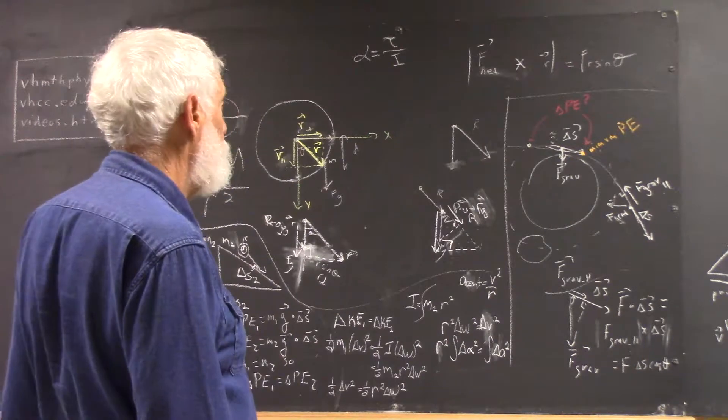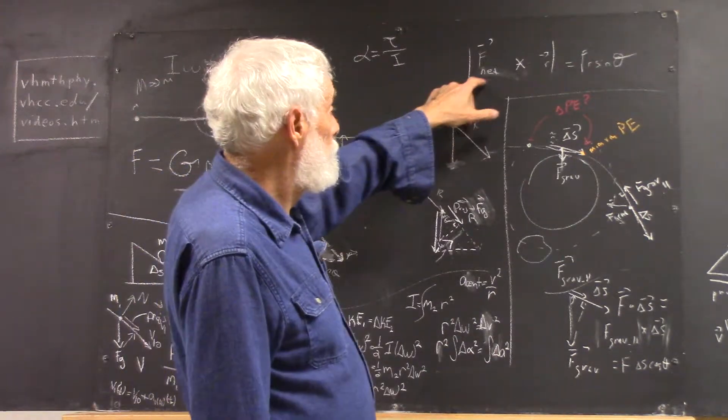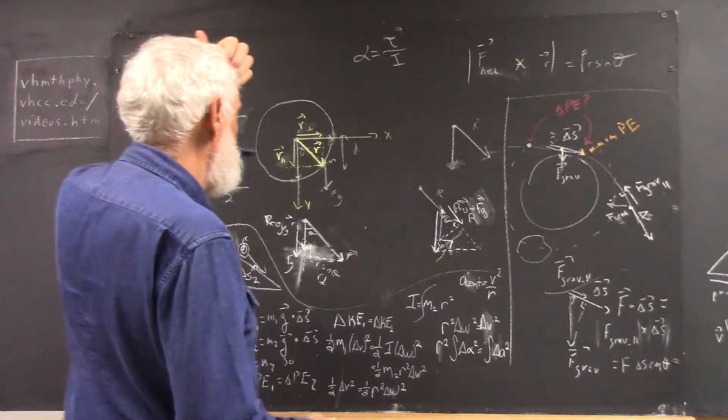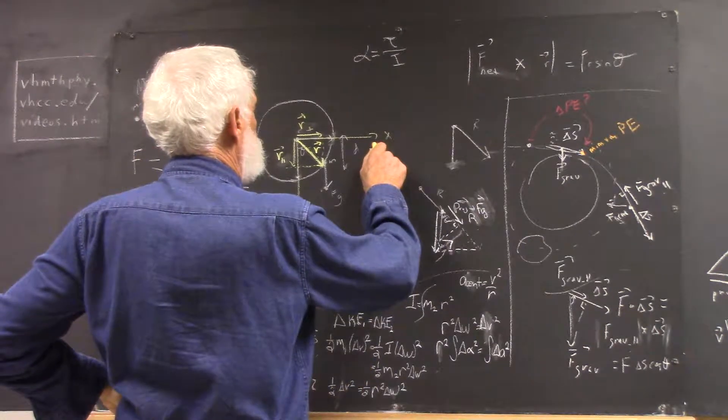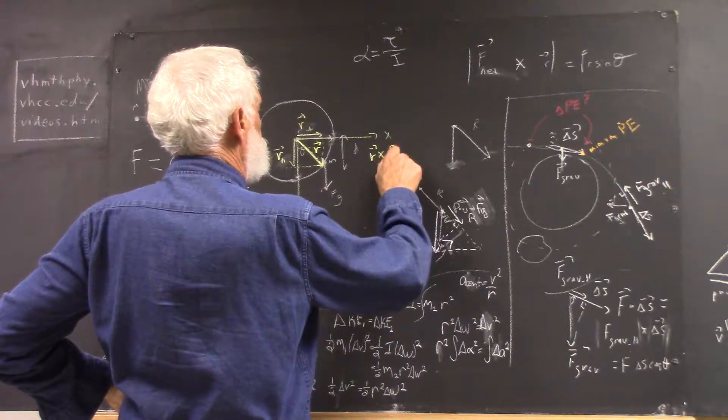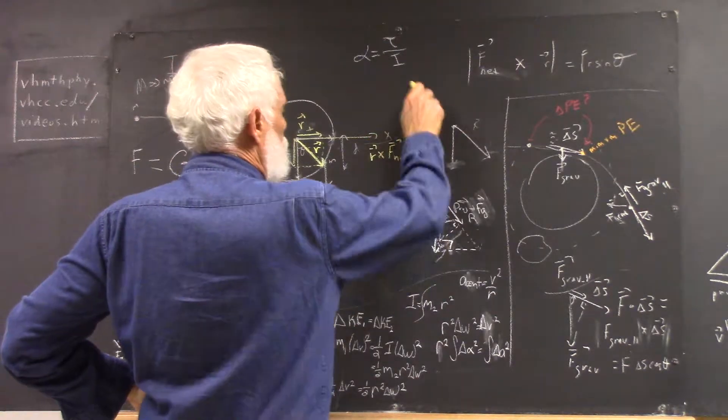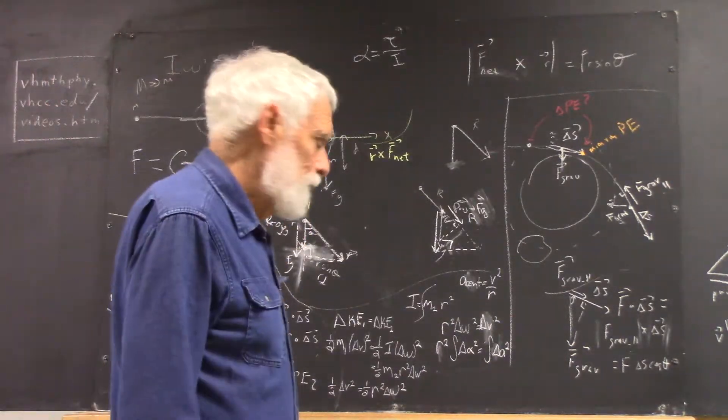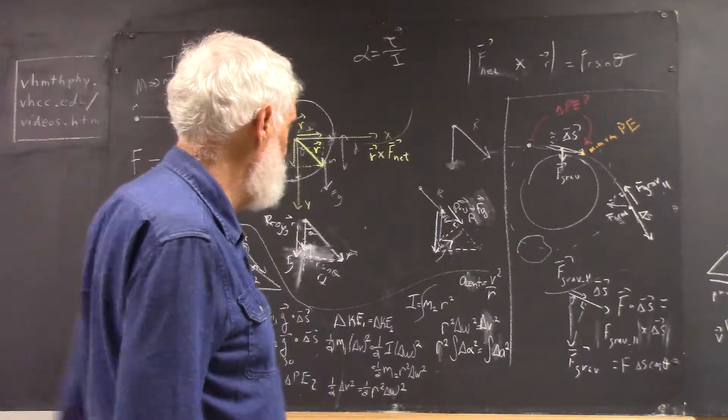Okay, so now we want to calculate f-net dot r, f-net cross r, cross product. And actually it should be r cross f-net. And I actually think I wrote that backwards when I stated the problem. That didn't occur to me when I looked at this because the magnitude is going to be what it is anyhow.